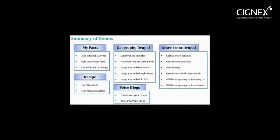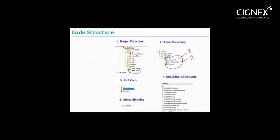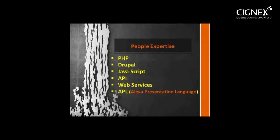Today we saw 6 demos. Here is the code structure. For developing Alexa Drupal PHP skills, you need a Drupal server on cloud or on premise. You will need to host the Alexa Drupal libraries on the Drupal server. You will also need an AWS account to set up the callback from Alexa to your Drupal code. As far as people expertise is concerned, you need PHP expertise for building the skills, people who can do front-end design using Alexa's proprietary APL, and people who understand common technologies like JavaScript, web services, and JSON formats.